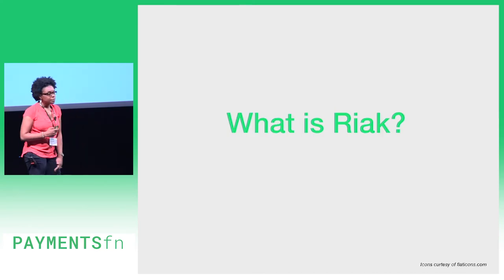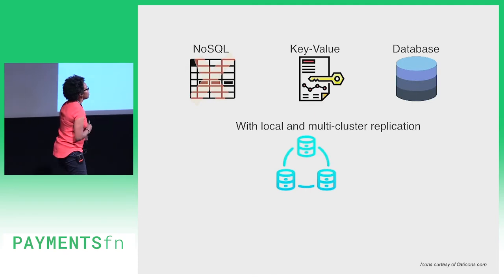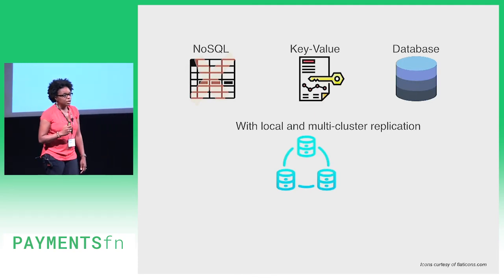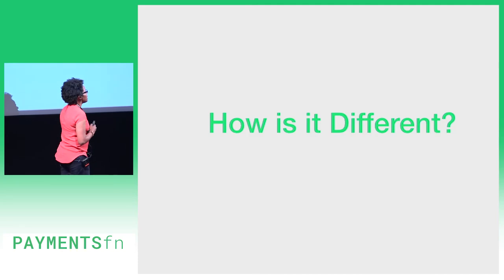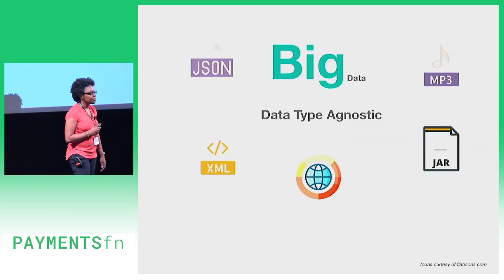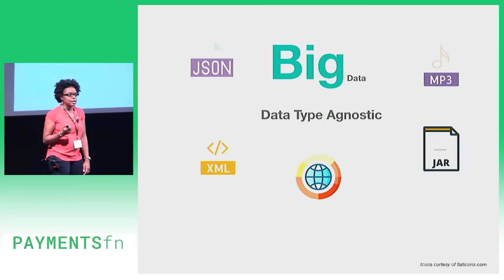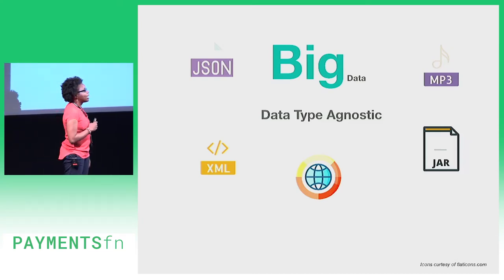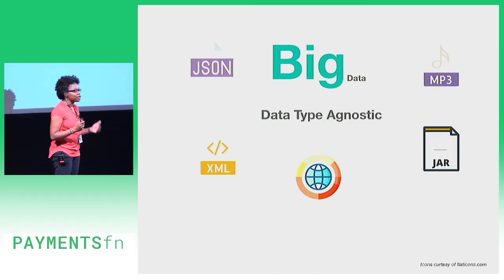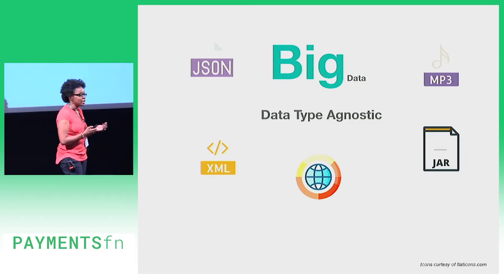So what is React? React is a NoSQL key-value database with local and multi-cluster replication. There are a lot of NoSQL databases out there nowadays, so why is React actually different? React is made for big data, and one of the big ways it does that is being data type agnostic. That means we can store anything we want into that value field — it doesn't matter what data type it is.